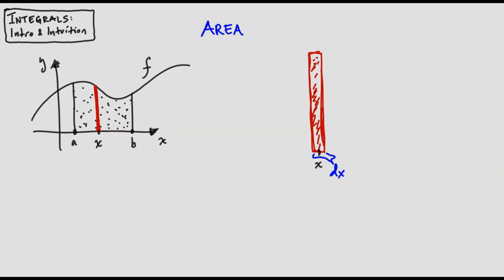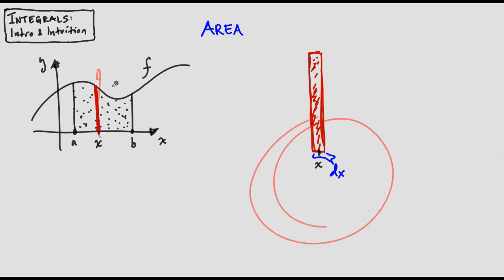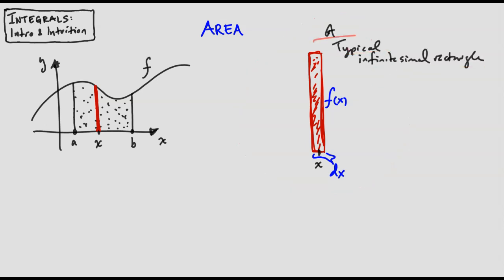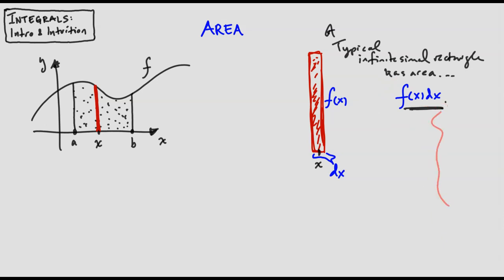What about the height of the rectangle? It's sitting at value x, so the height is going to be f of x. A typical infinitesimal rectangle has an area of height times base: f of x times dx. Note that this is a real number, f of x, times an infinitesimal dx, so the whole thing is an infinitesimal. The value of f of x depends on where we put the rectangle—it'll be higher at some points and lower at others.